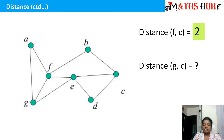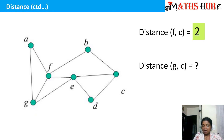Similarly, what is the distance between G and C? Between G and C you can find numerous paths: one connecting G to F, F to E, E to C; then G to E, E to C directly; then G to E, E to D, D to C. Out of all these paths and many others you can construct, the shortest one has distance 2.